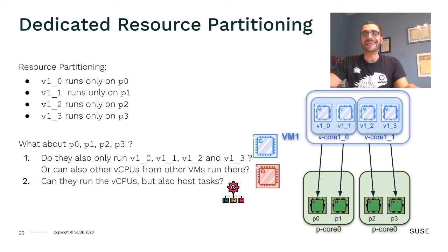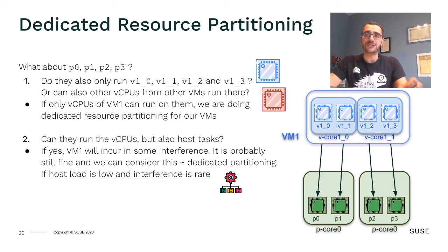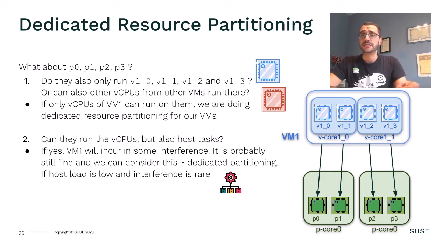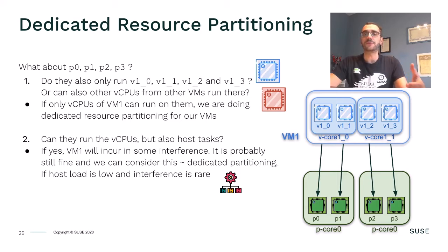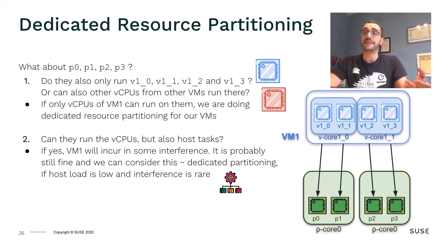Looking at the host a little more, if we configure the system so that the VCPUs of each VM run on a disjoint subset of physical CPUs, then we are doing what is called dedicated resource partitioning for the VMs. What about host tasks that are not VCPUs? Ideally, you would isolate your VCPUs from any interference, including from host tasks. However, if the system is only devoted to running virtual machines, the interference from regular host tasks would hopefully be small, and in that case such a configuration can still be addressed as dedicated resource partitioning.